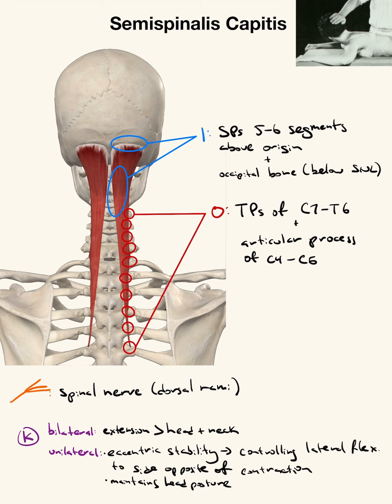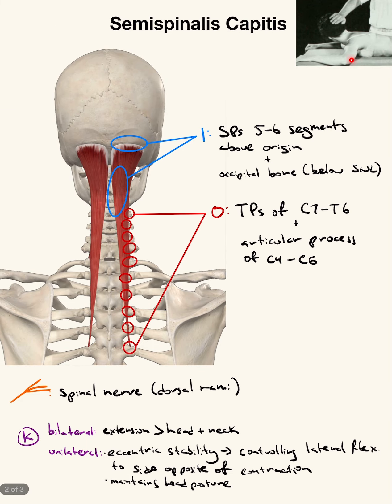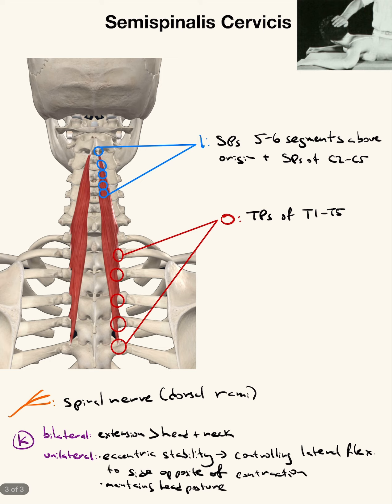That's the supreme nuchal line, this is superior, this is inferior. The innervation is the spinal nerve dorsal rami. Actions are extension, eccentric stability, controlling lateral flexion, and maintaining head posture. The muscle test is like everything else.